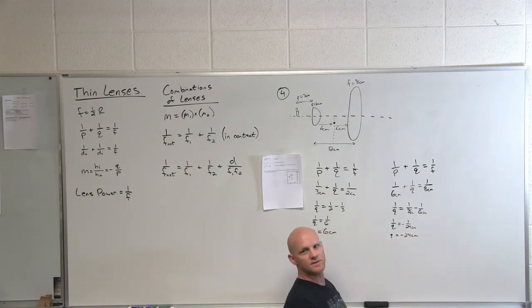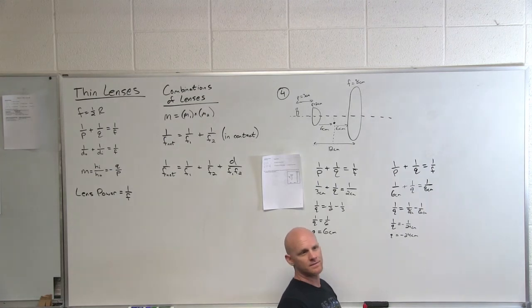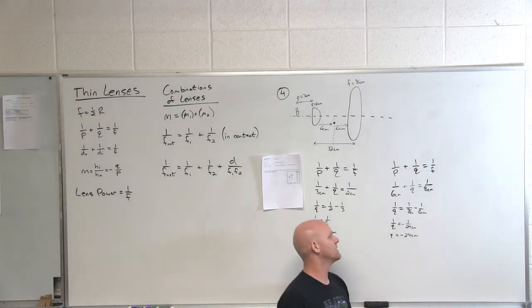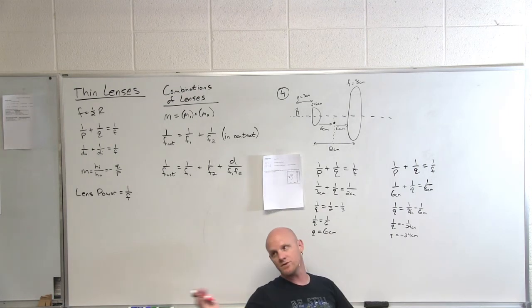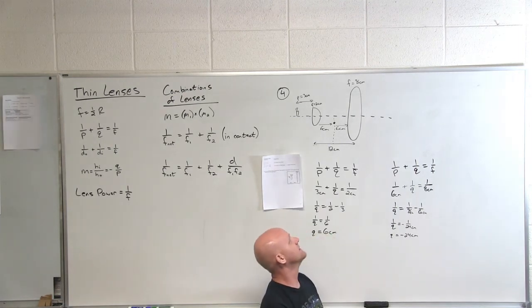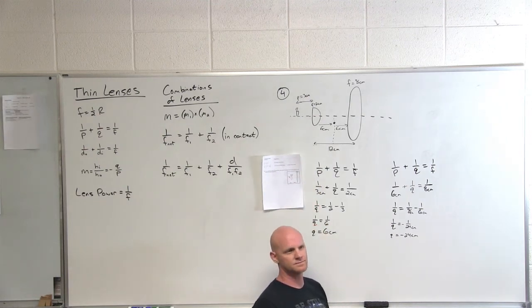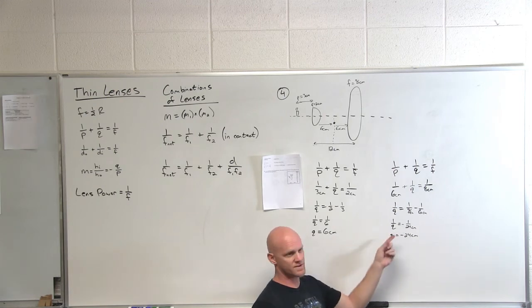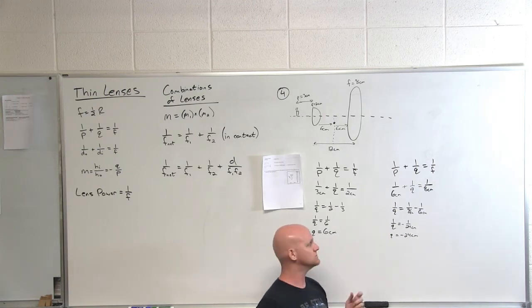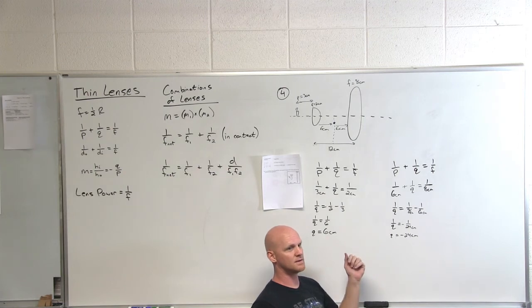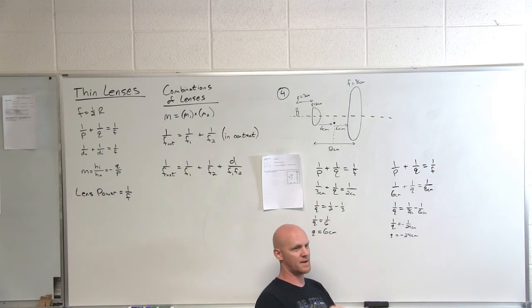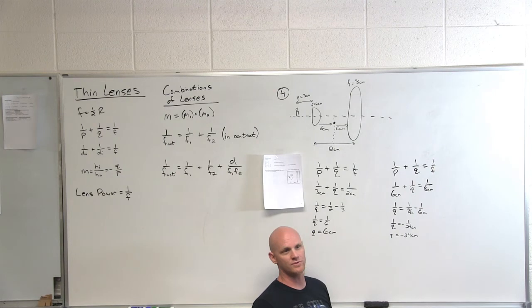What is the fact that it's negative mean? It means that it's going to be virtual and virtual means it's upright. So if we look then, going through the first lens, were the light rays inverted? Yes. Going through the second lens, were they inverted again? Q being negative means it's virtual and virtual means it's upright. So it didn't get flipped back over. They were flipped upside down through the first lens and then stayed upside down through the second lens. But we can kind of see that another way.